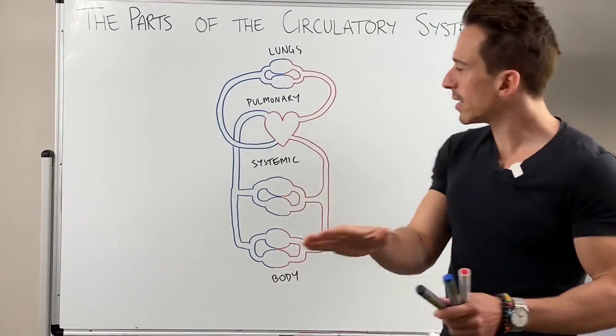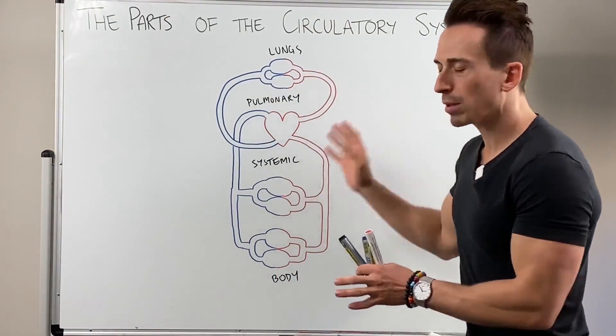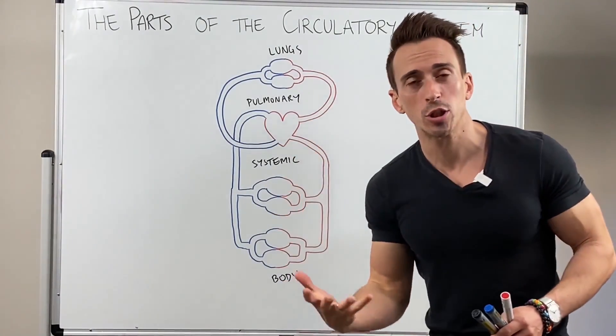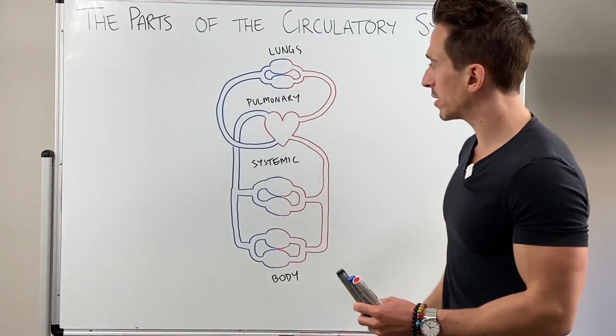So they're the two different types. Now you can see that I've drawn up some blood vessels in blue and some in red. This is highlighting the degree of oxygenation, how much oxygen is present.